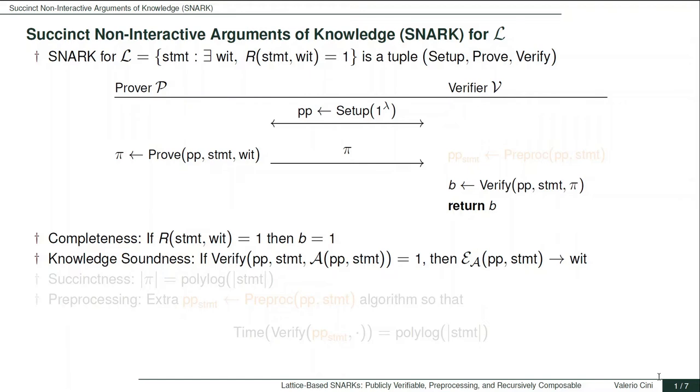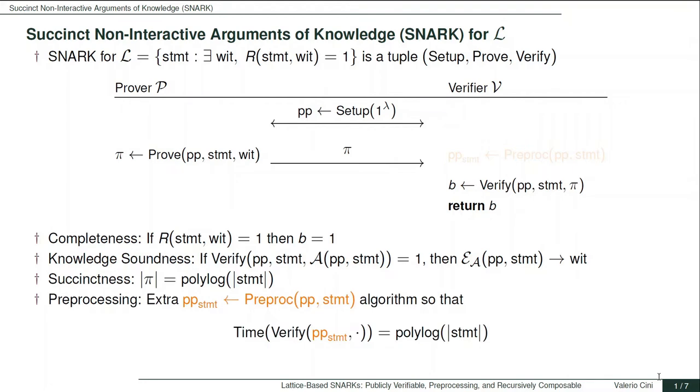These two properties alone are trivial to achieve by having the prover send the witness to the verifier. What makes the construction non-trivial are the efficiency requirements. The first one is what we call succinctness and requires that the size of the proof should be polylogarithmic in the size of the statement. An even stronger requirement is what we call preprocessing. Here, the verifier can preprocess in an offline phase the public parameters, so that the online verification runs in time polylogarithmic in the size of the statement.